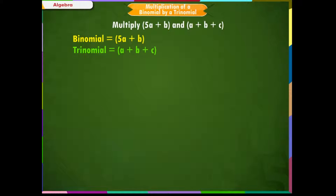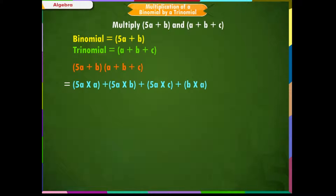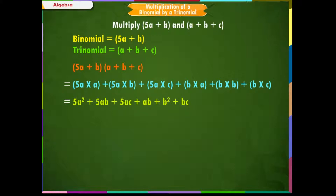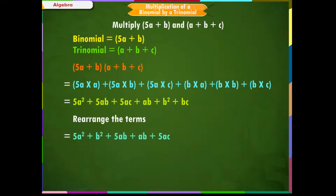Write in the multiplication expression: 5a plus b into a plus b plus c. Using the FOIL method: 5a into a, plus 5a into b, plus 5a into c, plus b into a, plus b into b, plus b into c. Rearranging the terms gives 5a squared plus b squared plus 5ab plus ab plus 5ac plus bc.